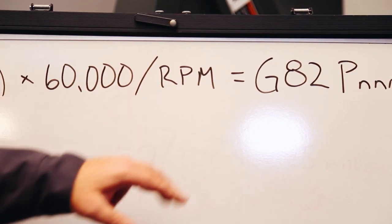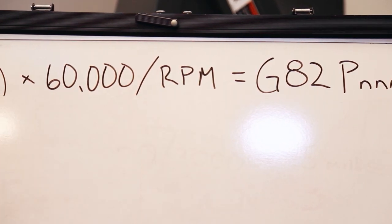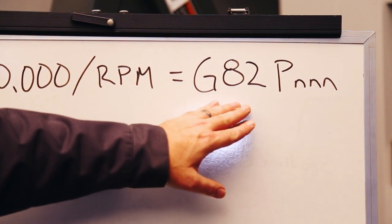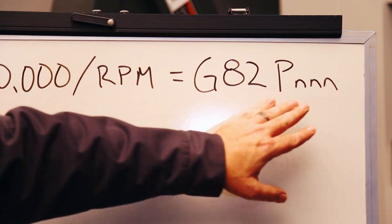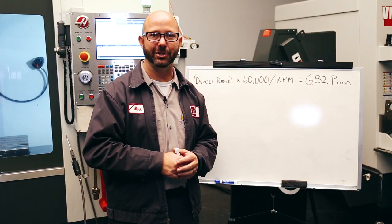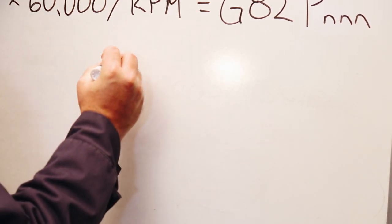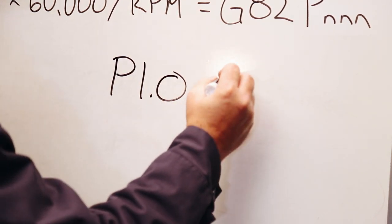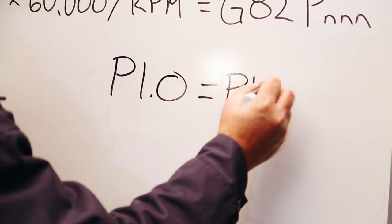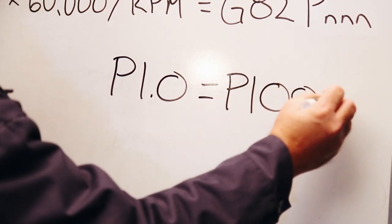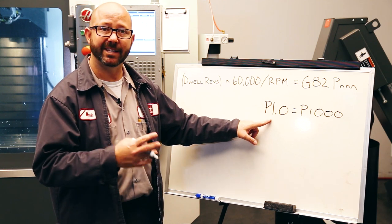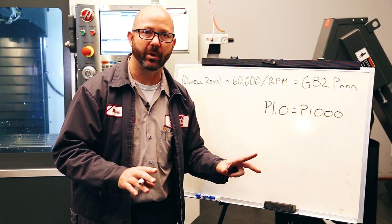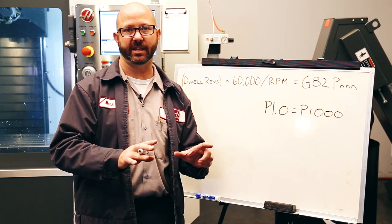RPM is just the S code, our RPM value in our program. And G82 is our spot drilling can cycle with a P value. This P value is what our formula is trying to get us to. A P 1.0 equals one second. That's a one second dwell, but so is a P 1,000. If our program uses a decimal point, then the control is gonna read this dwell in seconds. If our P value does not have a decimal point in it, then the control is gonna read that as milliseconds.